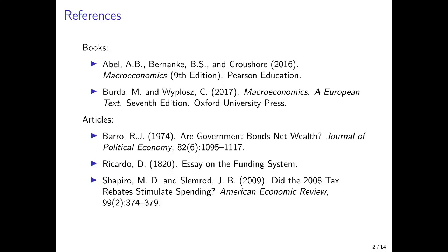Excellent treatments of Ricardian equivalence include the books by Abel, Bernanke and Kraschauer, Macroeconomics, the 9th edition, and Buda and Wiblosz, a 2017 Macroeconomics, a European text. The articles I use in the presentation are by Barro 1974, 'Are Government Bonds Net Wealth' in the Journal of Political Economy, the original article by David Ricardo, 'An Essay on the Funding System', and a recent paper by Shapiro and Slemrod, 'Whether the 2008 Tax Rebates Stimulated Economic Spending' in the American Economic Review. I'm also highly indebted to Franz Hof from the Vienna University of Technology for his discussions of Ricardian equivalence. So thank you very much, Franz.